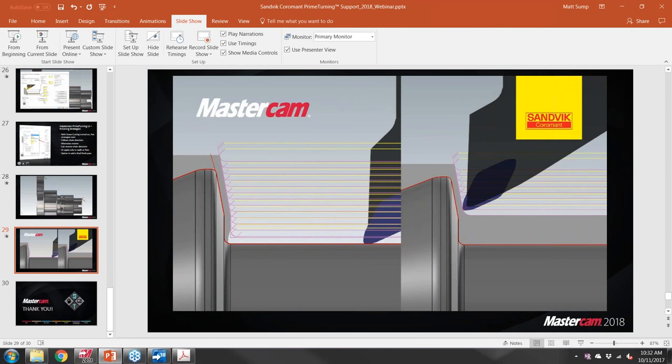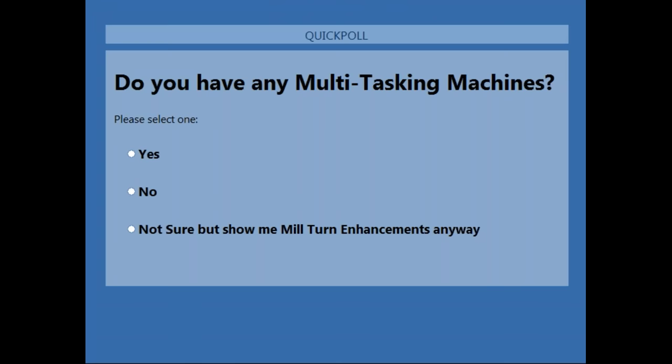Before passing back to Ryan, a poll is launched to find out how many attendees have mill turn-style machines — such as an Integrex-style, upper B/lower turret, or twin turret/twin spindle machines. Results show a good number of people have mill turn equipment, so the mill turn content will be covered.